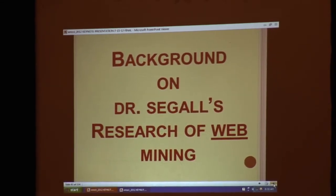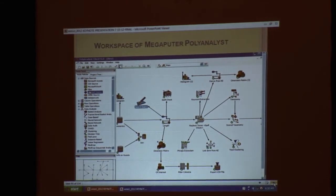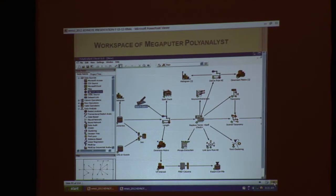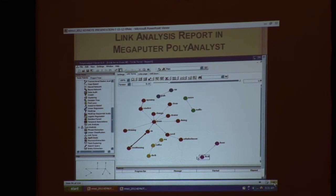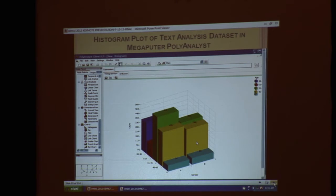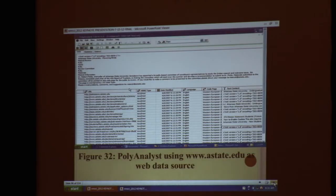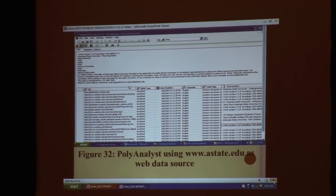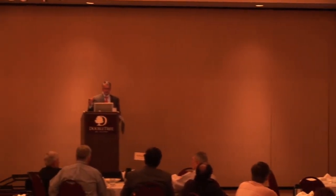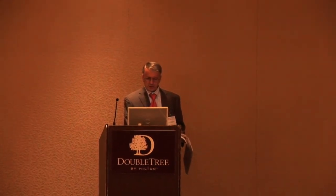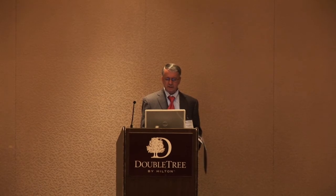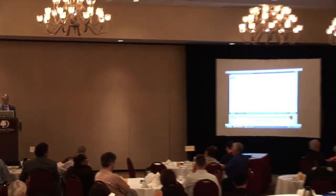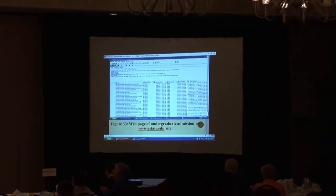Now I'll talk about my research in web mining. Megaputer Polyanalyst can be used for both text mining and web mining. Here's the workspace for Megaputer Polyanalyst — we used the same data, including the link diagram, and took histogram frequency plots of age groups and gender for respondents. We also looked at Arkansas State University's website for the amount of information stored there, since any university is now very intense in putting things on the web for public dissemination or internal administration use. We were able to extract undergraduate admission data, since many applications can also be done online — using web mining to extract undergraduate admission data for Arkansas State University.